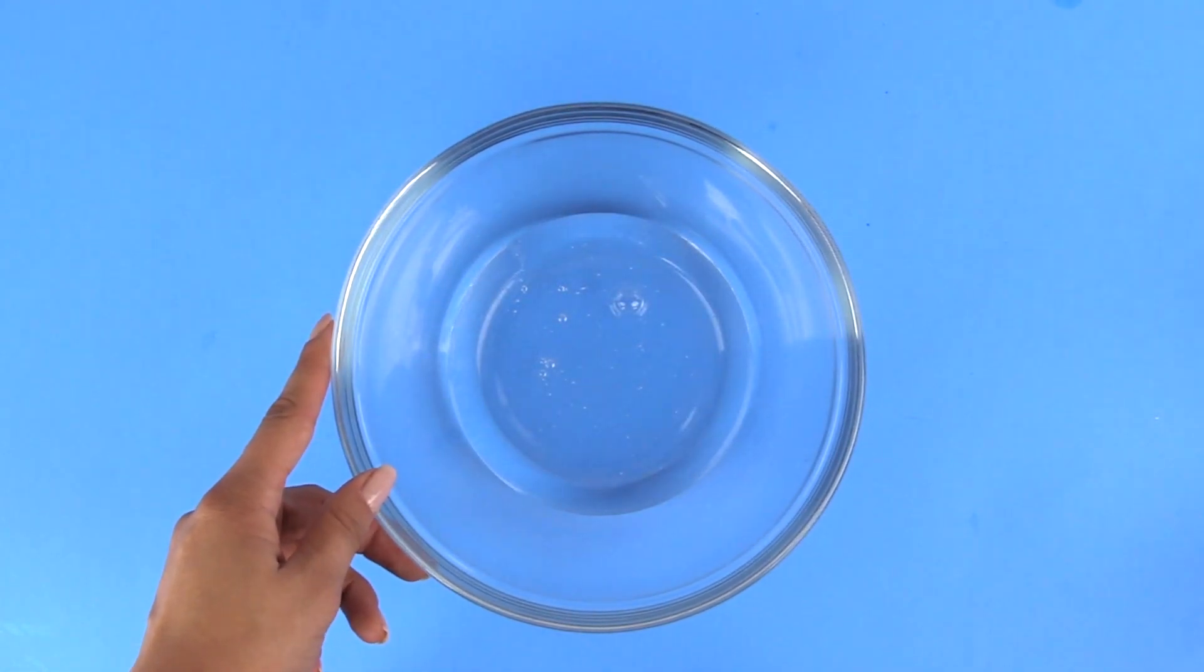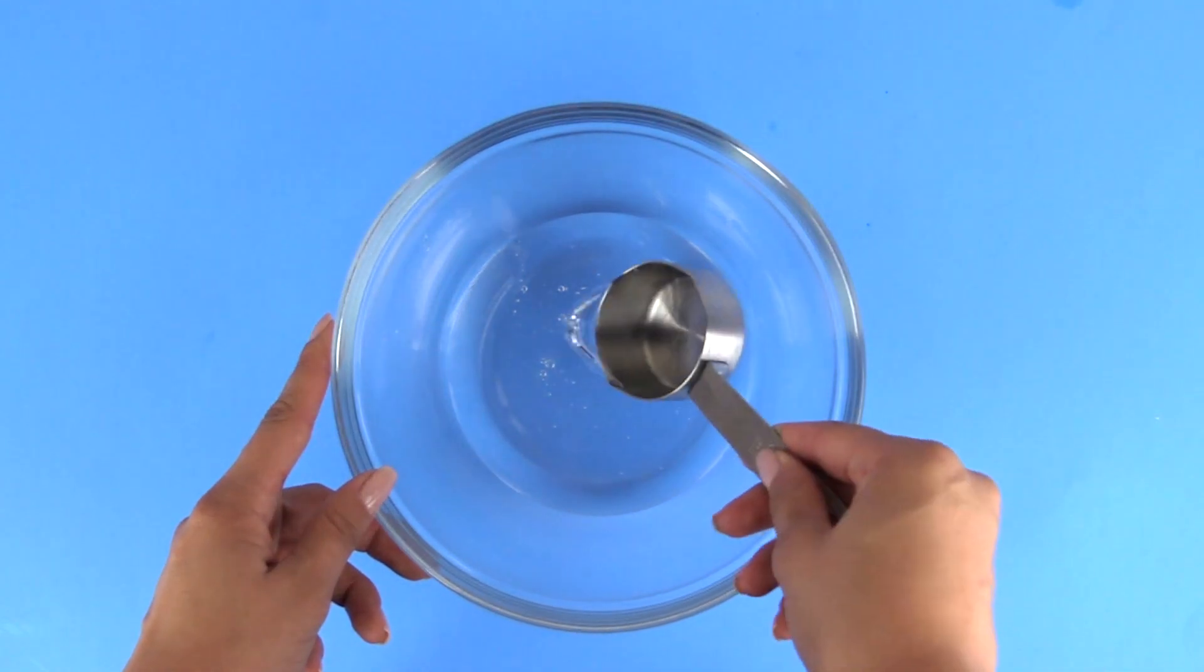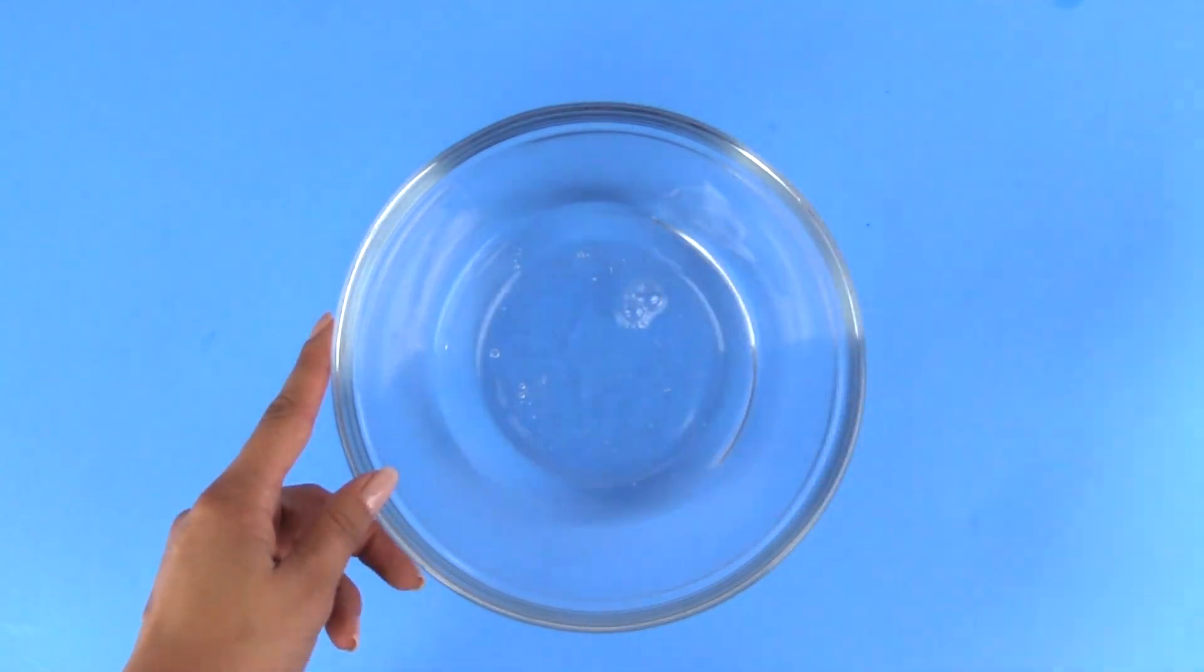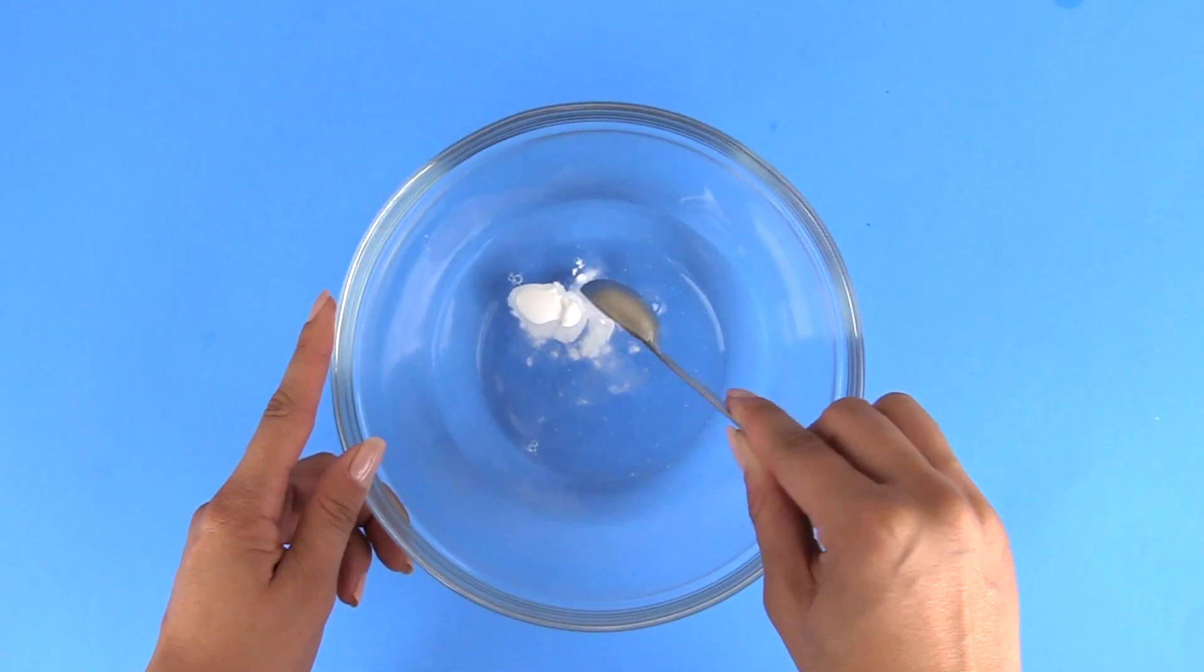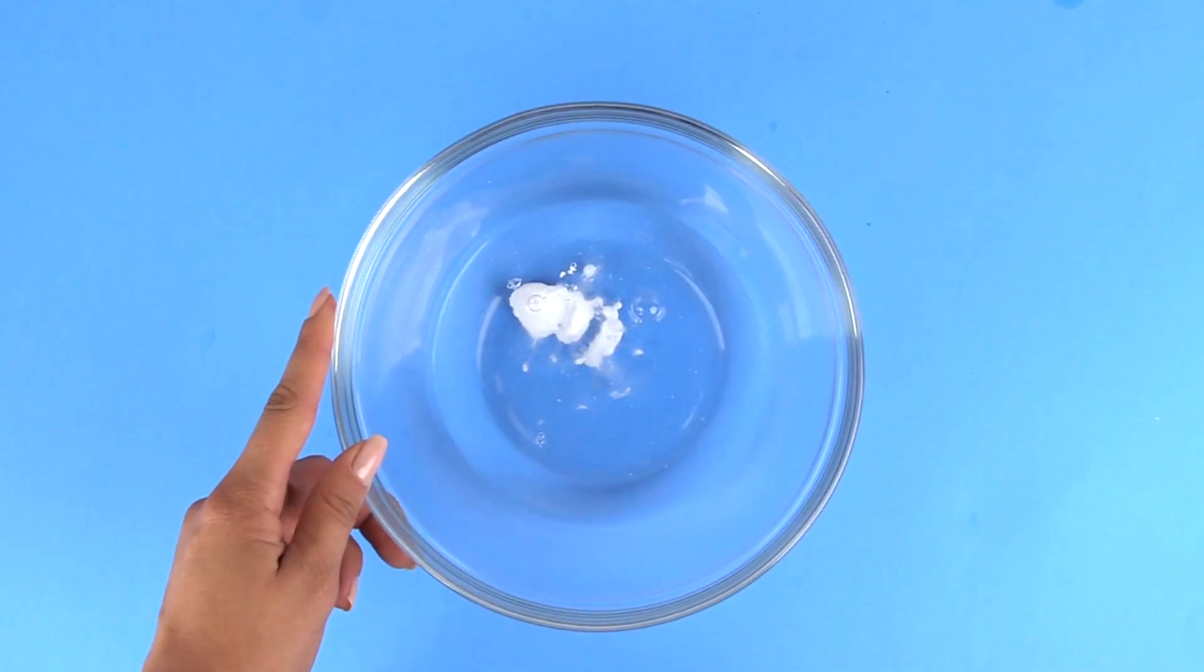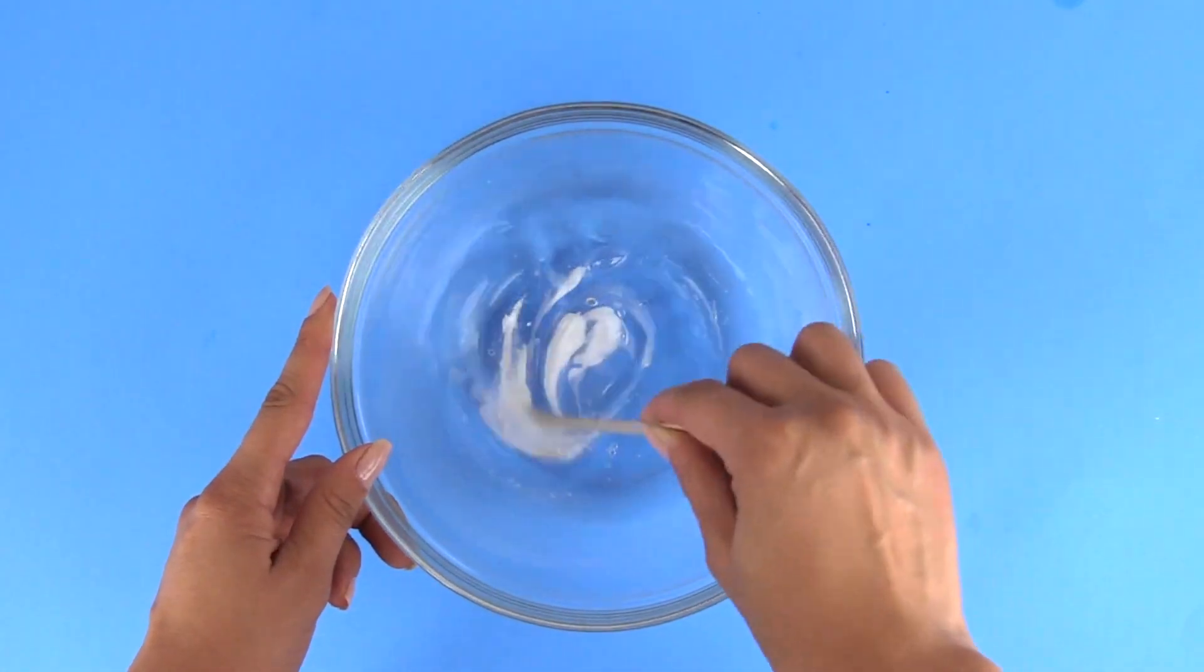Now we're going to be adding in one fourth cup of water. Now I'm going to add one teaspoon of baking soda. And let's give this a quick stir.